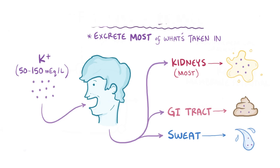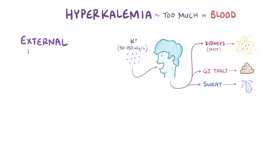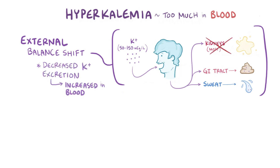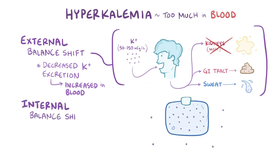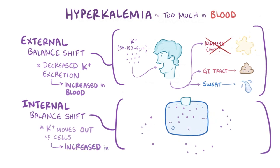In order for there to be too much potassium in the blood, or hyperkalemia, there are two possibilities. The first is an external balance shift, most often caused by a decrease in potassium excretion in the kidneys, which raises potassium levels in the blood. The second is an internal balance shift, where potassium moves out of cells and into the interstitium and blood.